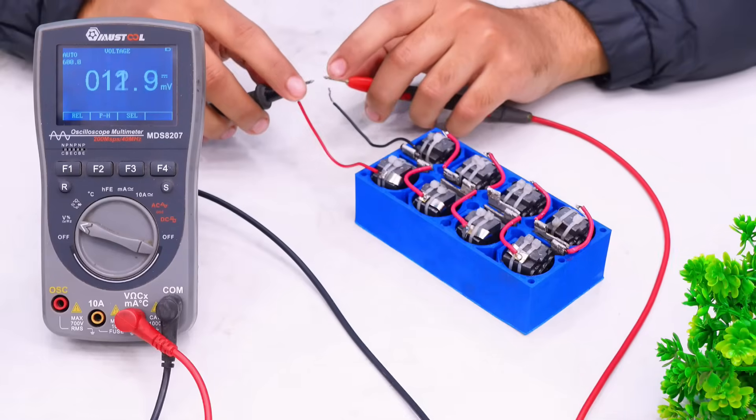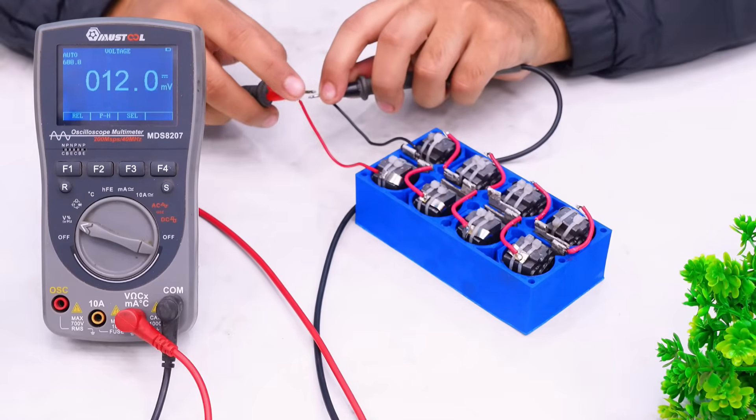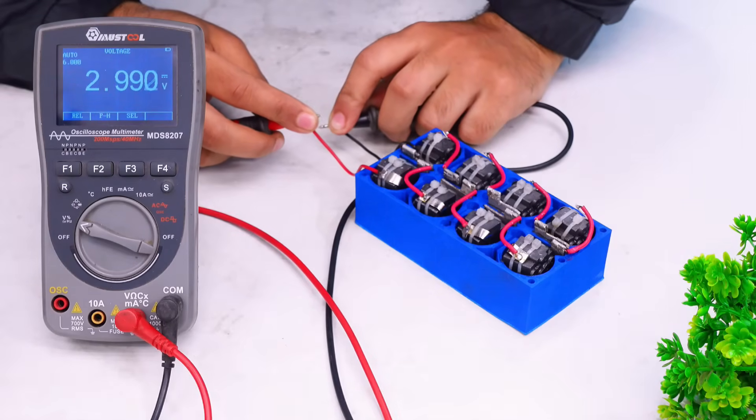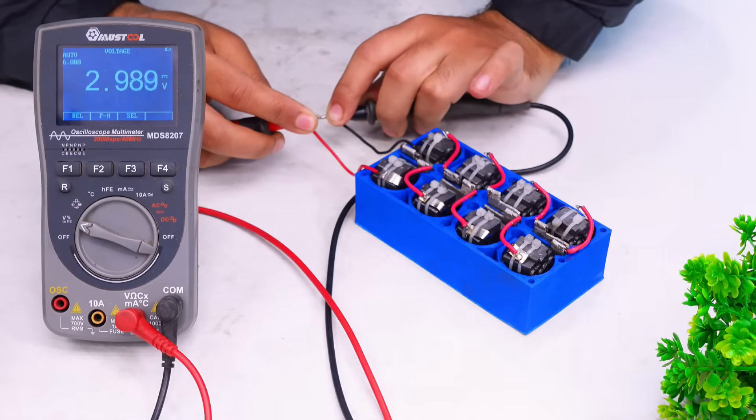So the overall output voltage that we will be getting now. Let's measure that also. Here we have 3 volts. Which means the individual cells are cancelling each other out.